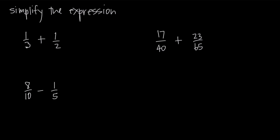We're looking for the smallest multiple of 3 that 2 is going to go into evenly. Our multiples of 3 are 3 times 1, 3 times 2, 3 times 3, 3 times 4, etc. If I take 3 times 1, I get 3, but 2 doesn't go evenly into 3, so that one's not going to work. What about 3 times 2? If I do 3 times 2, I get 6. 2 goes into 6 evenly — it goes in 3 times. So 6 is going to be my least common multiple.